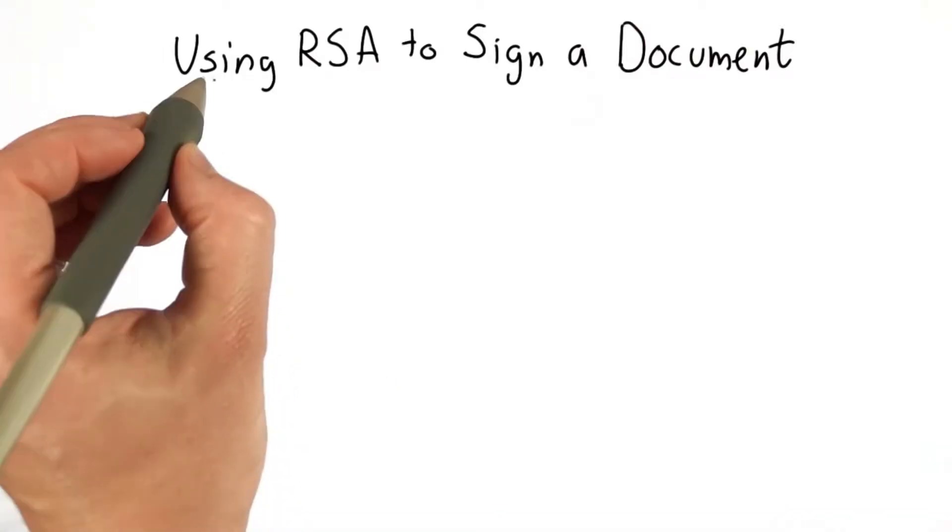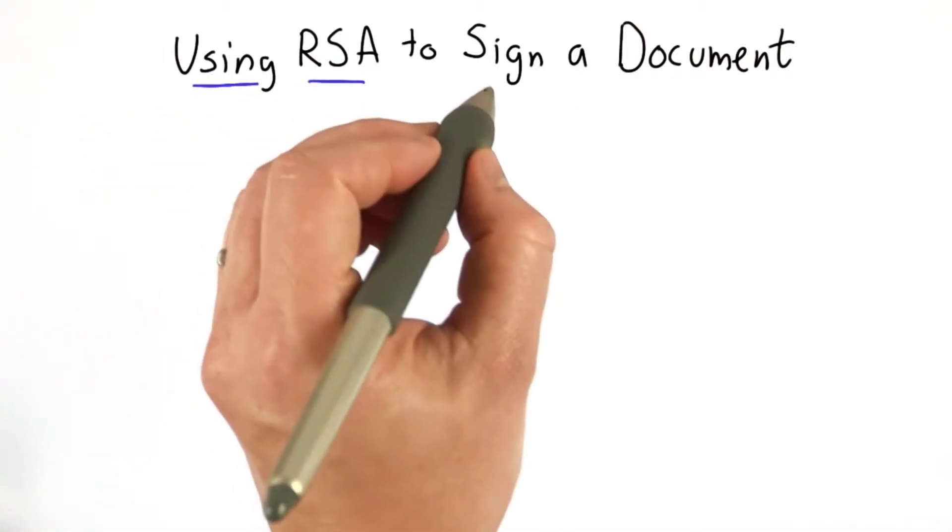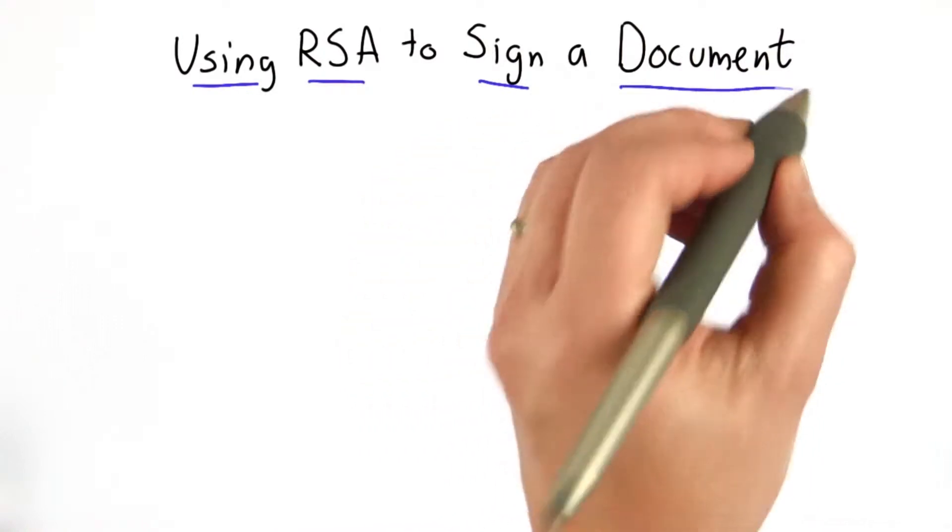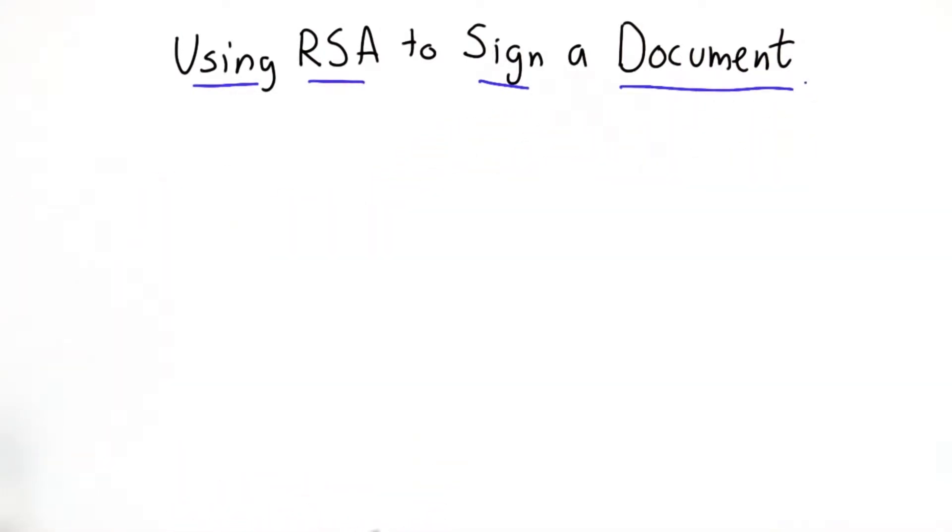The last thing we'll do in this unit is talk about how to use RSA to solve the problem of signing a document. This is what we started with as one of the key motivations for asymmetric cryptography.